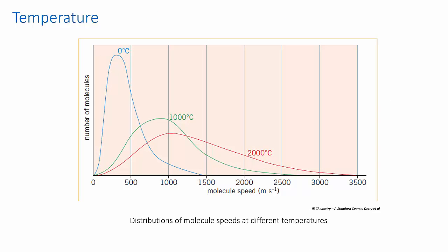Now, let's look at temperature. As you know from basic kinetic theory, as you increase the temperature of a substance, the distribution of molecule speeds changes. This diagram shows the Maxwell-Boltzmann distributions for nitrogen molecules at 0 degrees Celsius, 1000 and 2000 degrees Celsius.